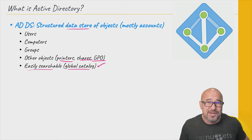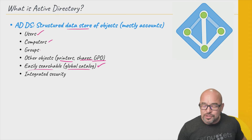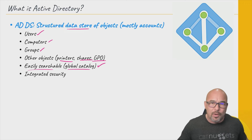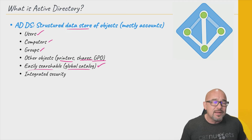Active Directory also has security features integrated directly into it. When users or computers log on, or when credentials are checked to see if we are members of certain groups, one of the things done involves a security check against our tickets. There are tickets issued — Kerberos tickets is what they're called. Users are issued Kerberos tickets when they log on. They're very secure tickets, and it's all integrated into Active Directory.